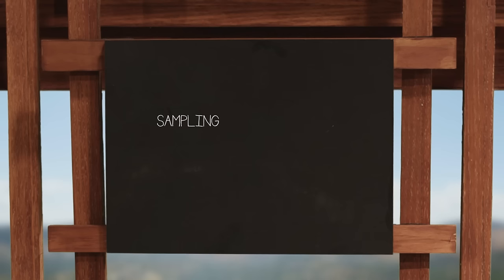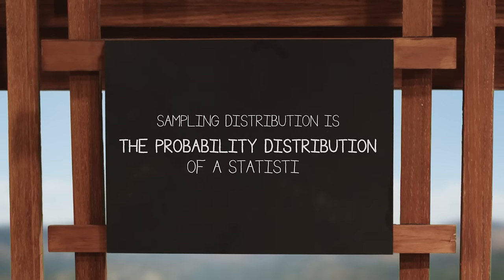But what is it, really? A sampling distribution is the probability distribution of a given statistic based on a random sample. It describes the what-if of all the possible estimates we could have ended up with. Still not sure what I'm talking about? Stick with me.